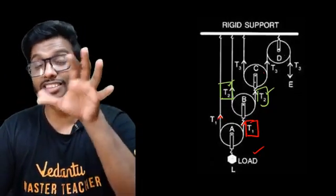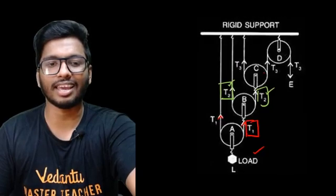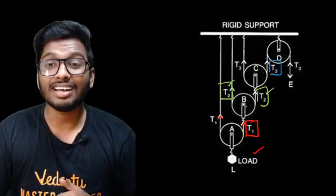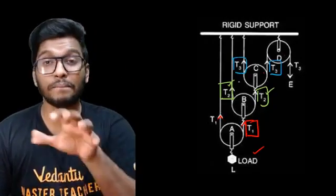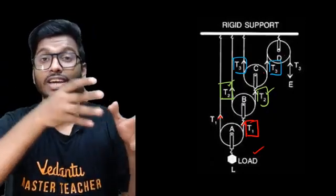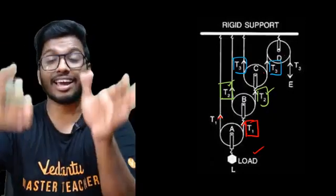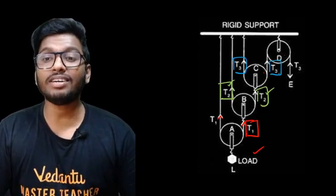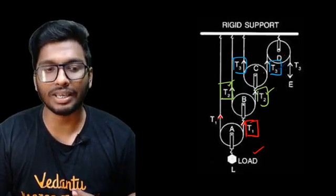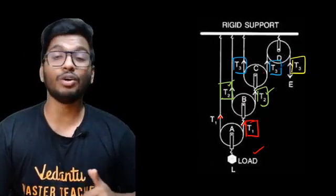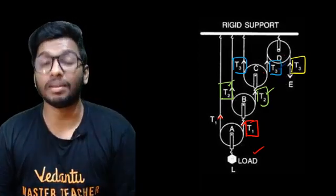Continuing to the third pulley system: for the third mobile pulley, T2 becomes the load, and the tensions T3 and T3 on its cable are caused by T2. Finally, for the last fixed pulley, we know that in a single fixed pulley the effort equals the load. So whatever is the value of T3, that same value of T3 is the effort required. Now let's work out what that really means numerically.